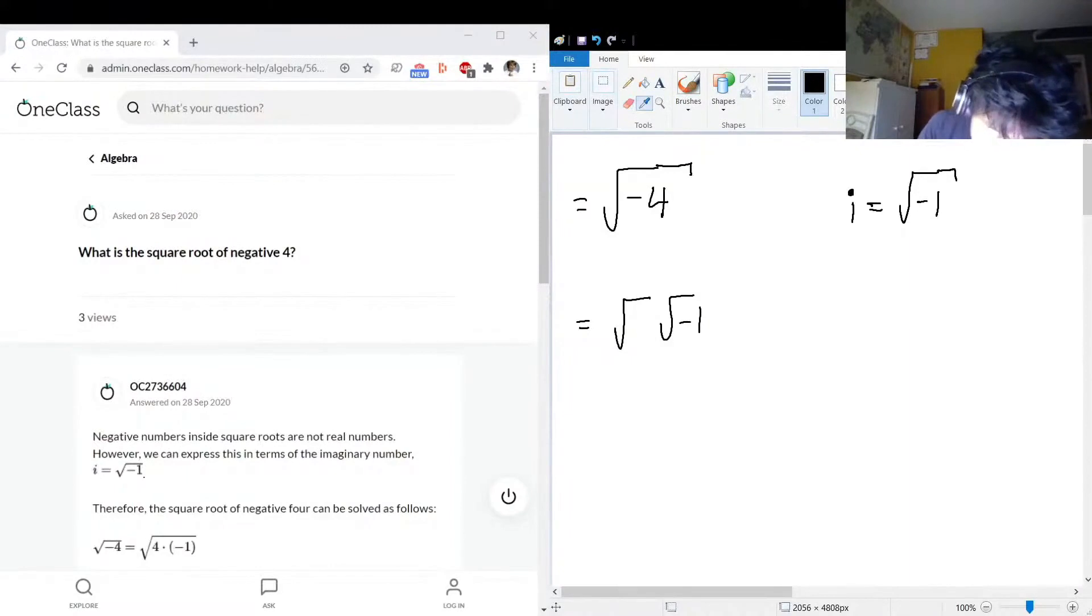You see how we can factor out, like negative four is just positive four times negative one. We can factor them out of each other and then keep them under separate roots.